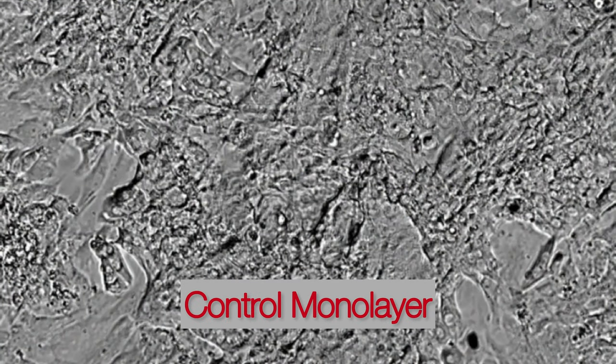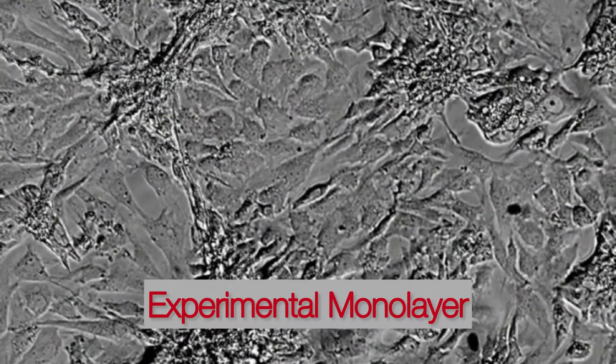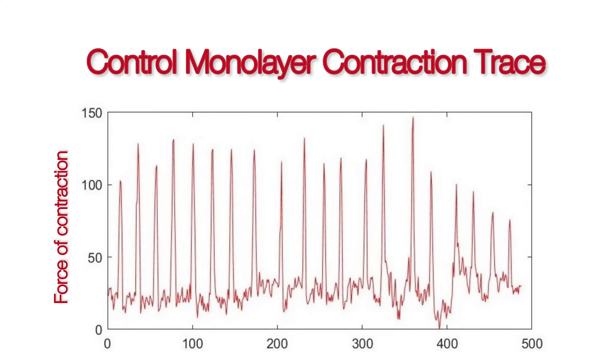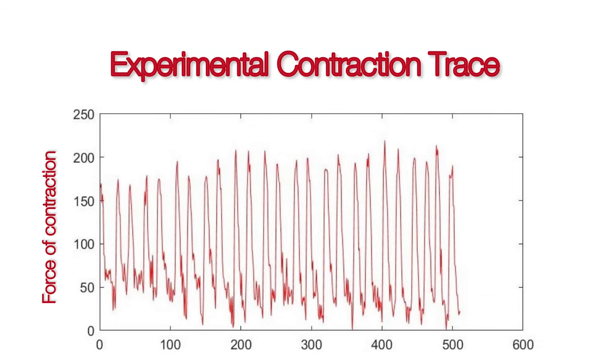The software was used to analyze two cardiomyocyte monolayers: a control monolayer where no treatment was added, and an experimental monolayer in which a treatment was added to alter the cardiomyocyte contraction rate. Post-analysis, the software generated reliable contraction traces, which are measures of the number of cardiomyocyte contractions over a period of time, and correctly displayed an abnormally high cardiomyocyte contraction rate in the experimental monolayer. Ultimately, the program successfully analyzed the cardiomyocyte contraction rates with additional manual selection capability, and the results indicated a clear distinction between the cardiomyocyte contraction rates of the control and experimental monolayers.